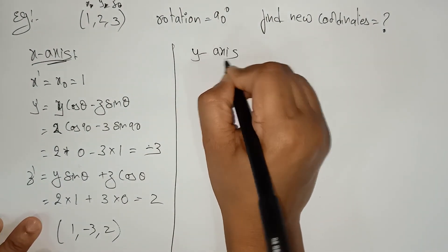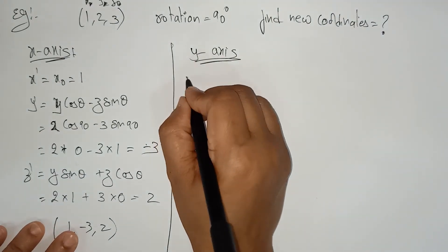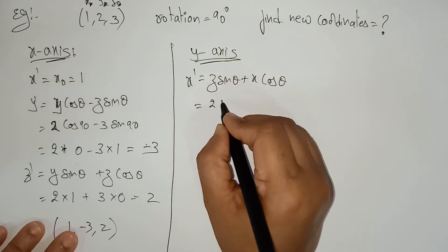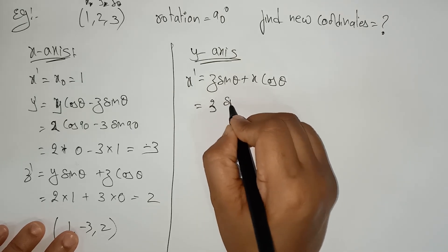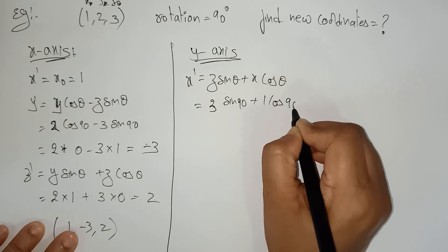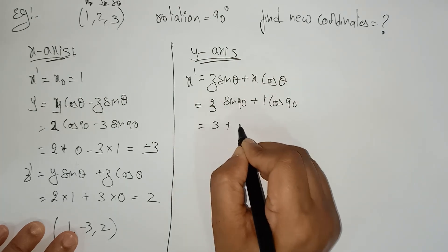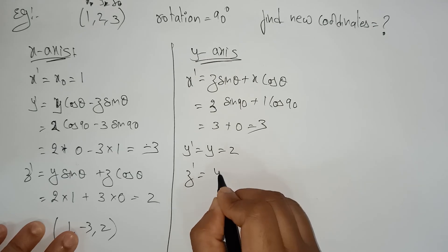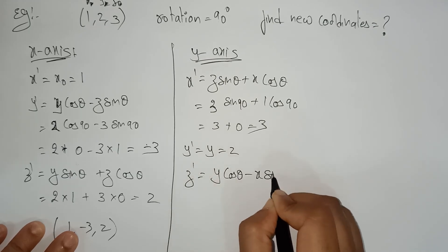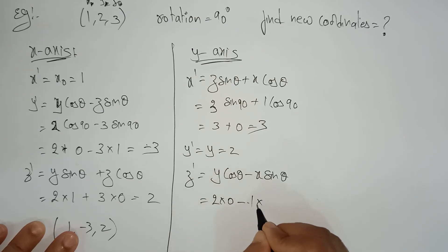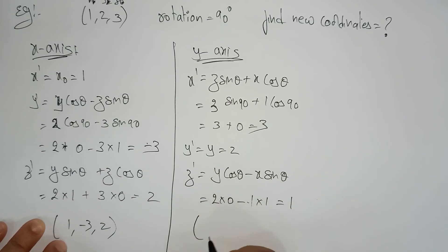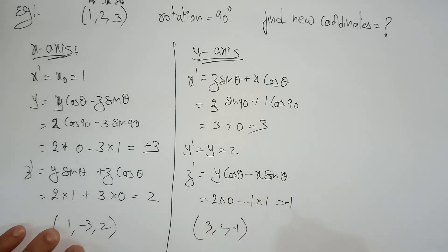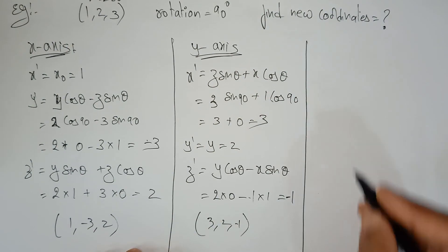For y-axis: x dash equals z sin theta plus x cos theta = 3×sin 90° plus 1×cos 90° = 3 plus 0 = 3. y dash remains the same = 2. z dash equals z cos theta minus x sin theta = 2×0 minus 1×1 = minus 1. So the new coordinates for y-axis rotation are (3, 2, minus 1).